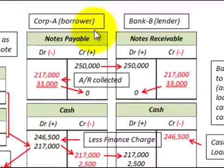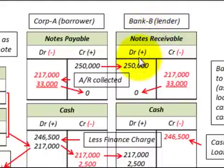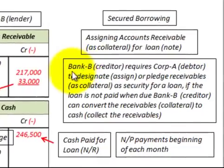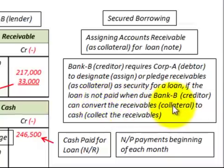Here we're going to be looking at secured borrowing or assigning accounts receivable as collateral for a loan. For example, Corp A wants to borrow money from Bank B, but Bank B will lend the money providing Corporation A assigns their accounts receivable as collateral. Bank B, the creditor, requires Corporation A, the debtor, to designate or assign receivables as security for the loan. If the loan is not paid when due, Bank B can convert these receivables to cash.